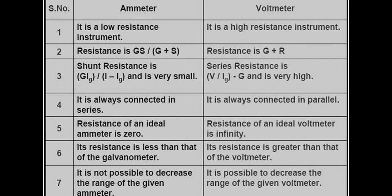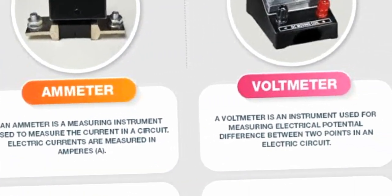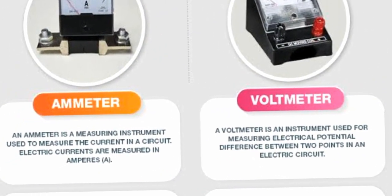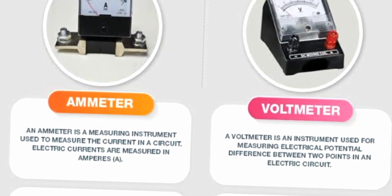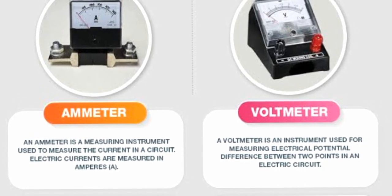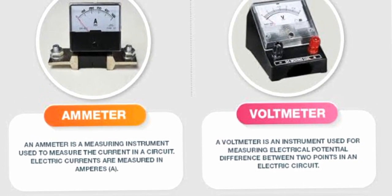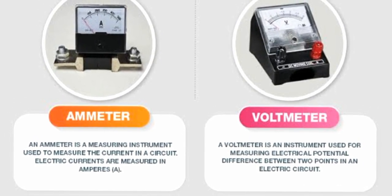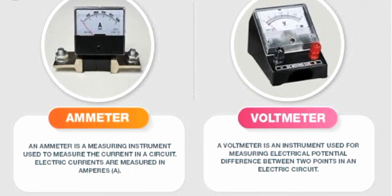The resistance of an ideal ammeter is zero, but the resistance of an ideal voltmeter is infinity. The ammeter's resistance is less than that of the galvanometer, and the voltmeter's resistance is greater than the galvanometer's. It is not possible to decrease the range of the ammeter, but it is possible to decrease the range of the voltmeter. The ammeter is a measuring instrument used to measure the current in a circuit, measured in amperes.